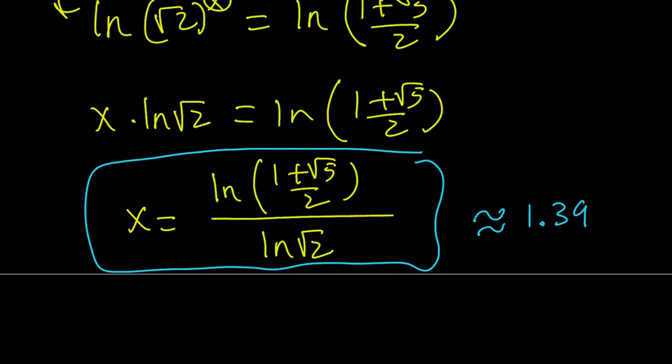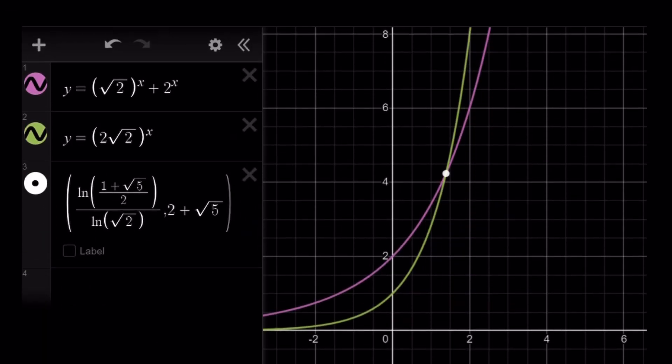Now let's go ahead and take a look at the graph of these functions and see how they intersect. So we're going to be looking at the graph of two things here. Square root of 2 to the power x plus 2 to the power x and 2 times square root of 2 to the power x. So remember, our original equation was like this. So we're kind of looking at the intersection point of two functions. And that happens to be at this point, where x is equal to ln 1 plus root 5 over 2 divided by ln root 2. And that's the y value if you plug it in, because this is a cubed.